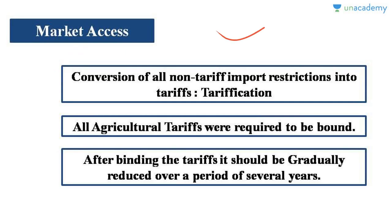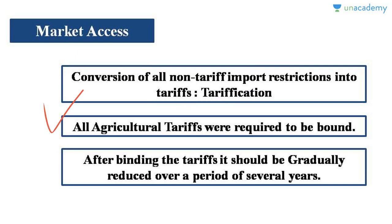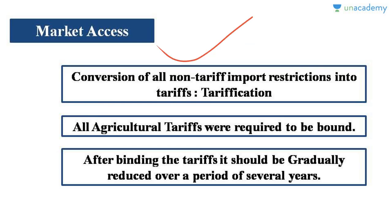The three pillars are: market access, domestic support mechanism, and export subsidies. The first pillar is market access. Before 1995, countries were free to put tariff and non-tariff barriers on agricultural goods. When a country signs the Agreement on Agriculture, it is required to convert all its non-tariff barriers on agriculture into tariffs. This process of converting non-tariff barriers into tariffs is called tarification.